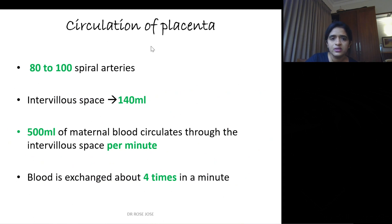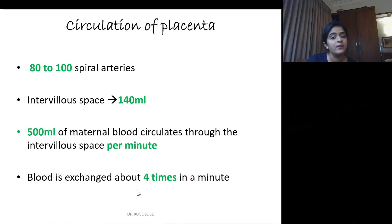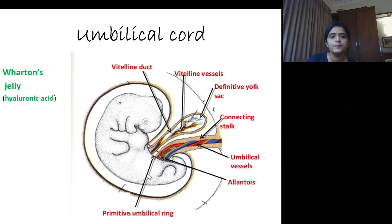When discussing circulation of the placenta, there are mainly 80 to 100 spiral arteries. The intervillous space is roughly estimated to be 140 ml. Per minute, about 500 ml of maternal blood circulates through the intervillous space, so the blood is exchanged roughly about four times per minute.